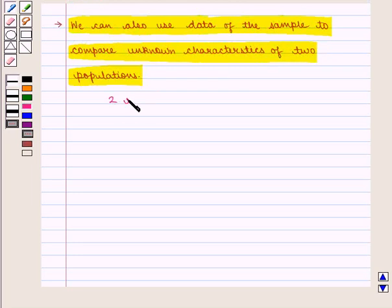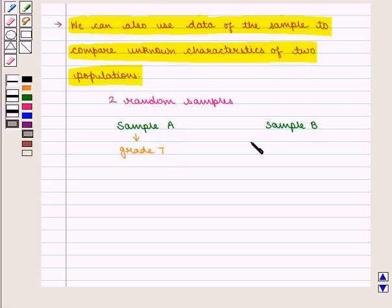Suppose we are given two random samples, that is sample A and sample B of grades 7 and 8 respectively. That is sample A is for grade 7 and sample B is for grade 8. And average height for sample A is given to be 4 feet, and that of sample B is given to be 4.7 feet.